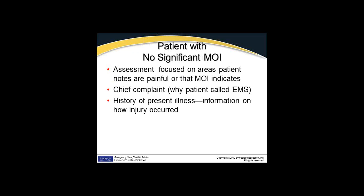For a patient with no significant mechanism of injury, the assessment is focused on the areas of the patient that they know are painful or that the mechanism of injury indicates - that patient who slid into base, someone who fell on outstretched arms and is only complaining of wrist or arm pain, or somebody who has a very isolated laceration. These are minor things that in many cases really don't need EMS, but we get called anyway, and at this time we transport these people to the emergency room.